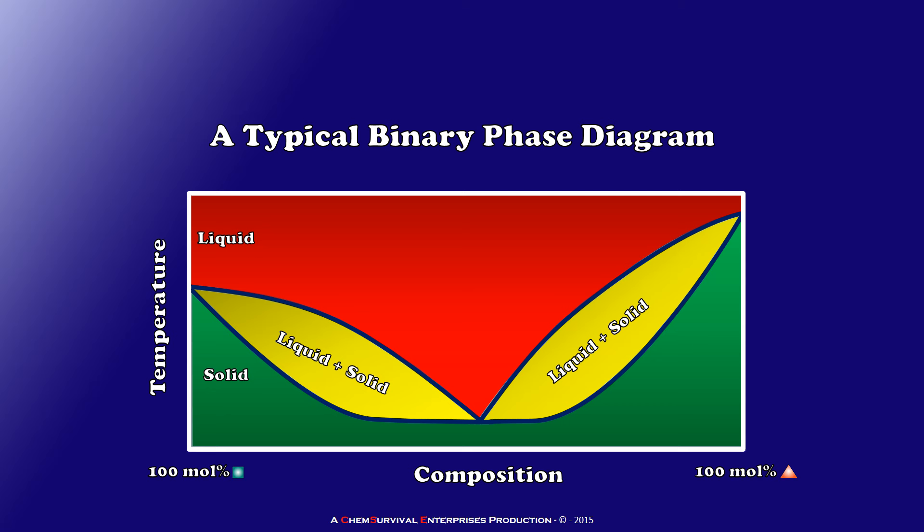And when we do this we get some interesting fields that we don't normally see in the phase diagrams of pure substances. Specifically those yellow colored fields where we have liquid and solid coexisting over a range of temperatures.